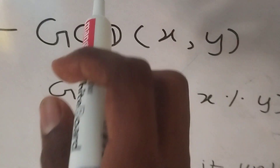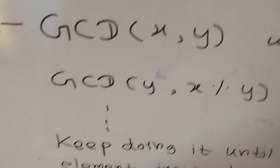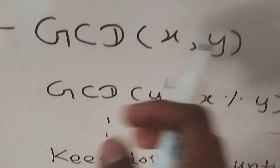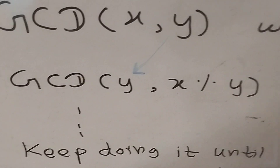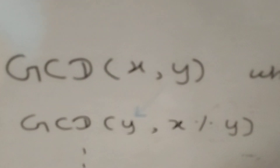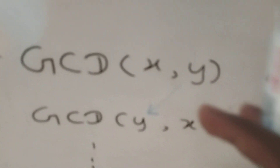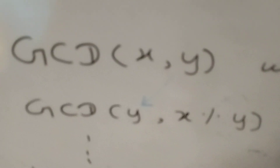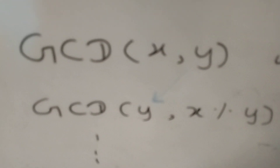The second step is iterative — you do it again and again until a terminating condition is reached. In each iteration, you put the second number in the first position, and in the second position you put the remainder of the first number divided by the second number (using the % operator). So GCD(x, y) becomes GCD(y, x % y).